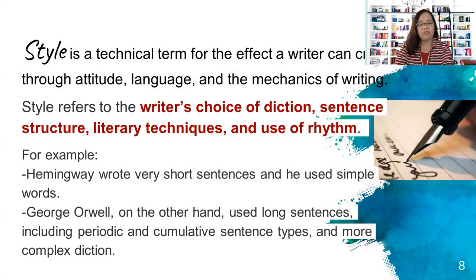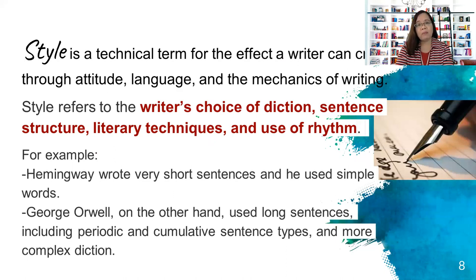Lastly is style. Style is a technical term for the effect a writer can have through the attitude, language, and mechanics of writing. Like tone, it is the writer's choice of diction, but this time we're looking at sentence construction and literary techniques. This includes paragraph length, the combination of short and long sentences, the use of idiomatic expressions, how often they are used, and whether we use clichéd phrases or not. All of this adds to a person's style.